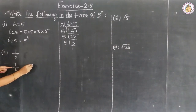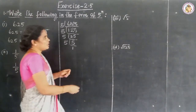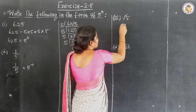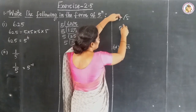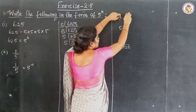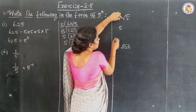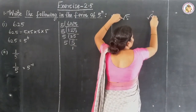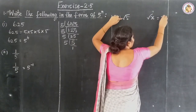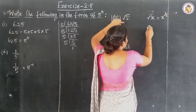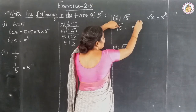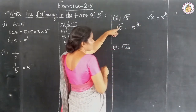Question number 3: root 5. As we already know, the square root of x equals x to the power of 1 by 2. So the square root of 5 equals 5 to the power of 1 by 2.